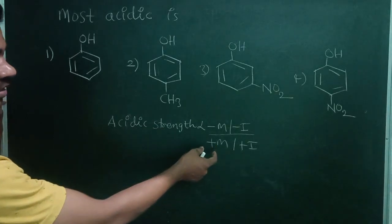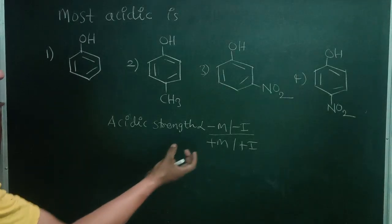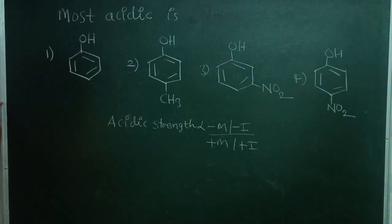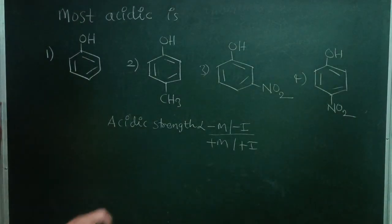Then stronger is the plus M or plus I, weaker is the acidic strength. So plus M or plus I groups will be releasing the electrons. They are electron releasing groups. Electron releasing groups increases the electron density on the particular compound so that it cannot release H plus ions quickly.